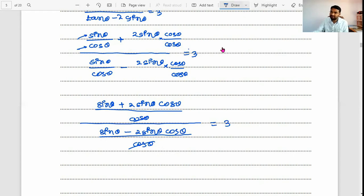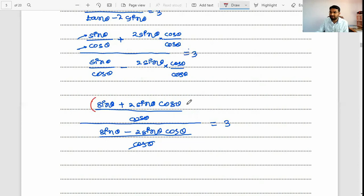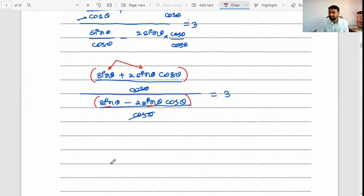From the numerator you can take out sin θ common, and from the denominator you can take sin θ common. Sin θ sin θ will cancel out and you will be left with just 1 plus 2 cos θ and 1 minus 2 cos θ.